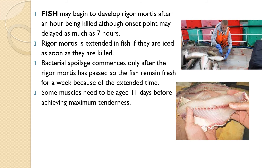Rigor mortis does occur in fish as well. After an hour of being killed, the onset point may be delayed by as much as seven hours. Rigor mortis is extended in fish if they are iced as soon as they are killed. Bacterial spoilage commences only after rigor mortis has passed, so the fish remains fresh for up to a week because of the extended rigor period. Some muscles need to be aged 11 days before achieving maximum tenderness.